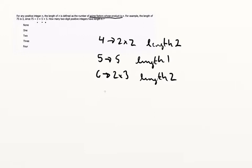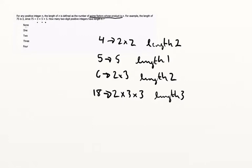And if we were to take, for example, 18, that would have a factorization of 2 times 3 times 3. Now let's address the question: how many two-digit positive integers have length 6? When you start stacking up these prime factors, the size of the number increases very rapidly as the length increases. So we're not actually going to have a huge number of two-digit positive integers with length 6, and our answers are limited to 4 maximum.